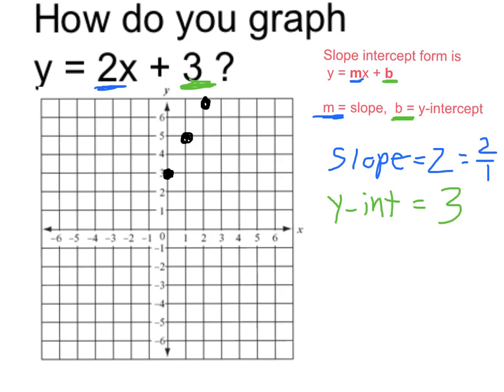but of course, it's going to extend in the opposite direction. Up 2 over 1 is equivalent to down 2 back 1, down 2 back 1, down 2 back 1.